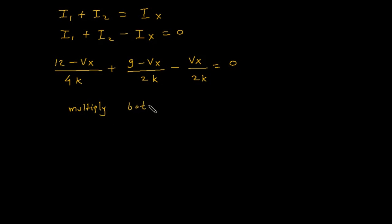Multiply both sides by 4k. So this will be 12 - Vx plus 2k times (9 - Vx) minus 2k*Vx is equal to 0.